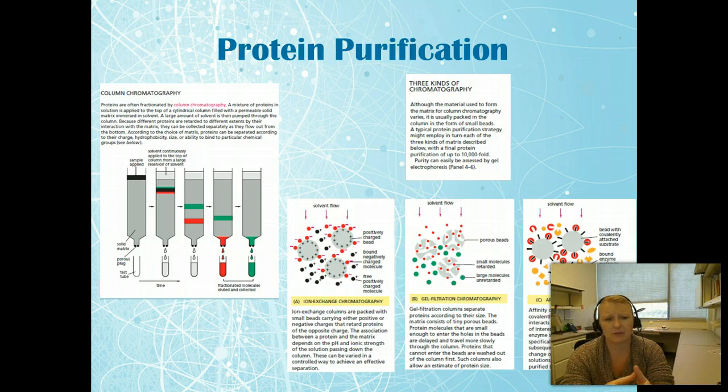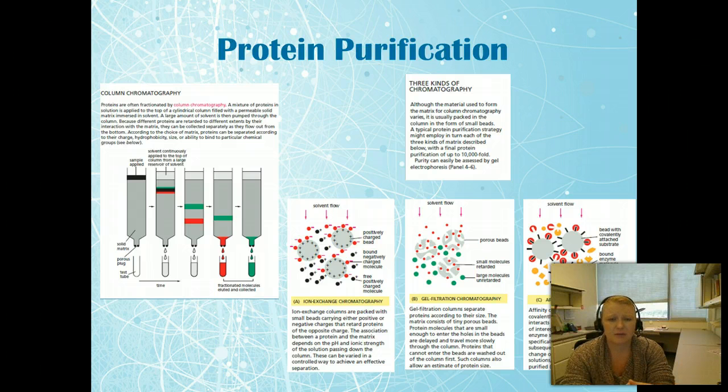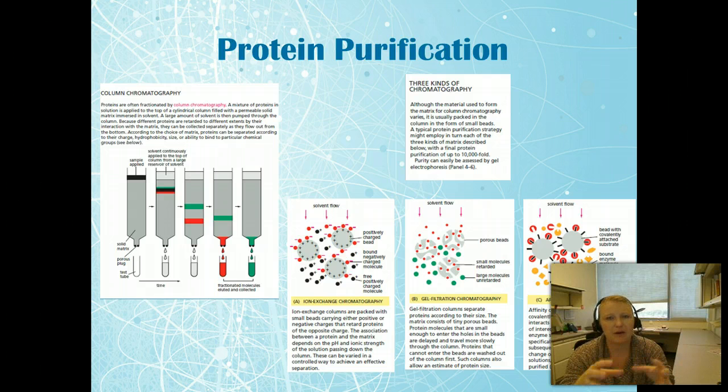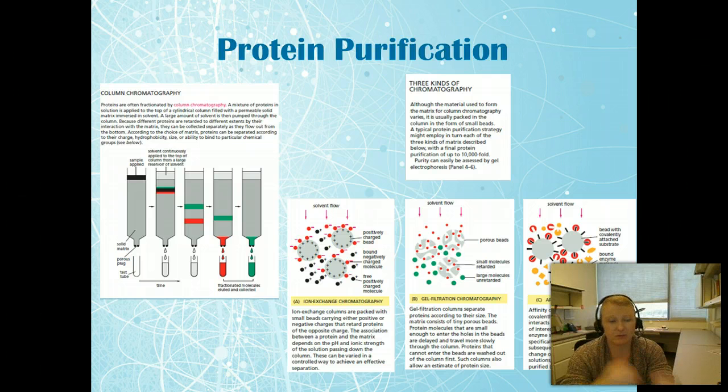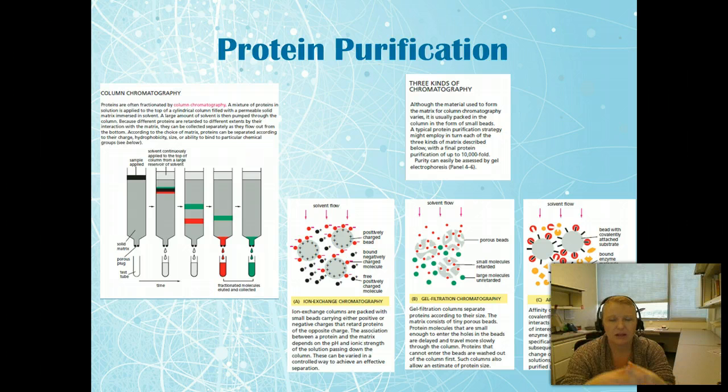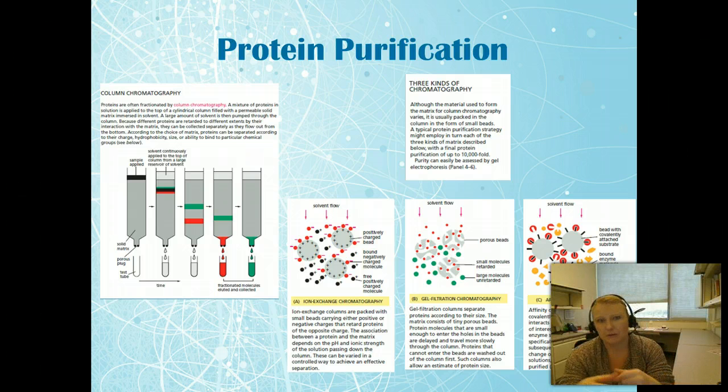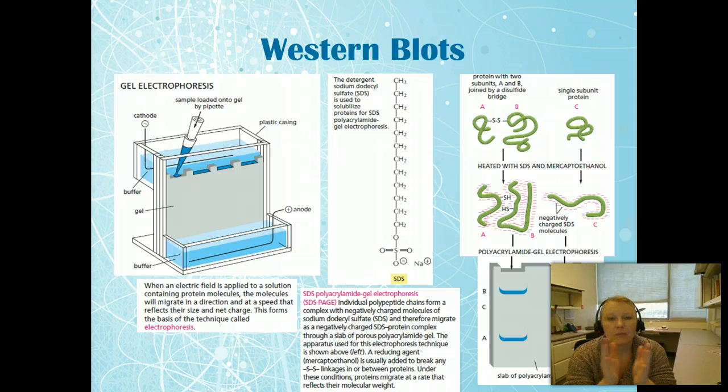There's three types of column chromatography: ion exchange chromatography, gel filtration chromatography, and affinity chromatography. I want you to review all three of these and compare and contrast the different types, because there's a reason why you'd use one versus the other. I want to see if you can figure that out. We'll talk about them in class if you want to work through them a little bit more, but I want you to look through them and see if you can think about why you would use ion exchange versus gel filtration.